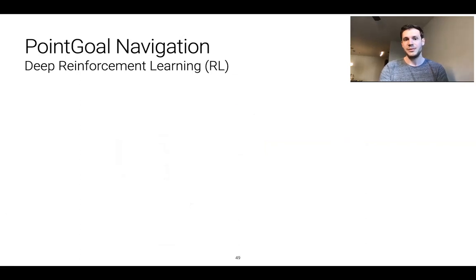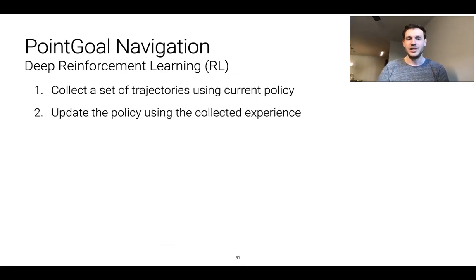In general, the loop of deep reinforcement learning that you'll see in the Habitat platform is as follows. First, we collect a set of trajectories using the current policy. Then we use the set of collected experience to update the policy and we repeat.